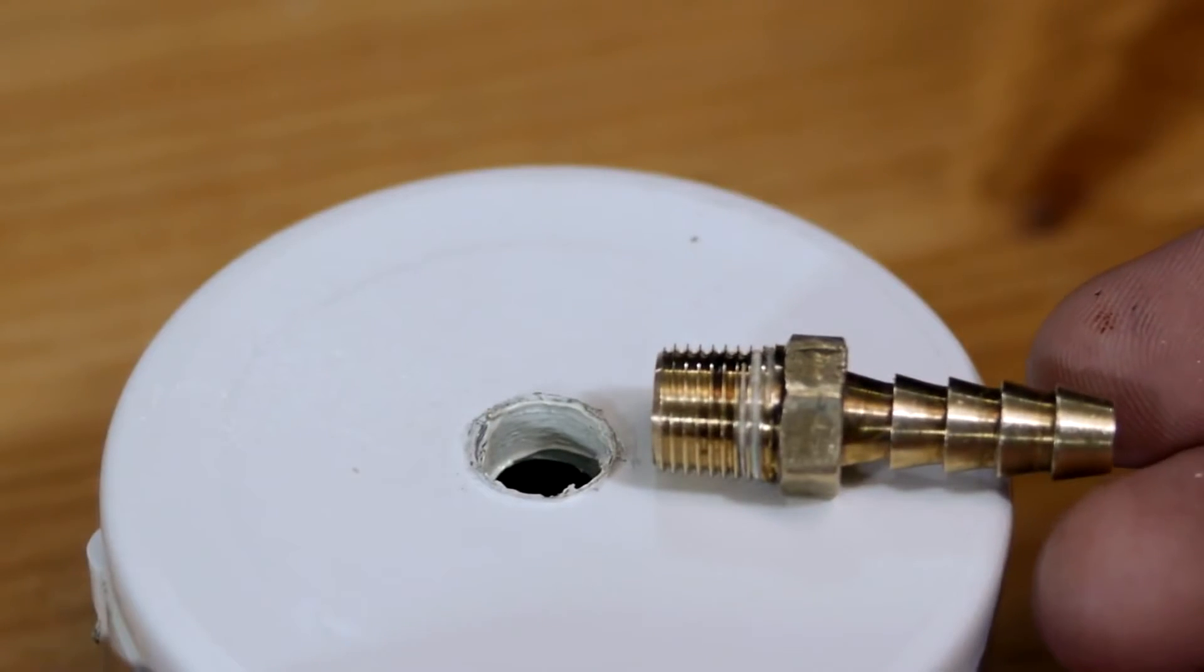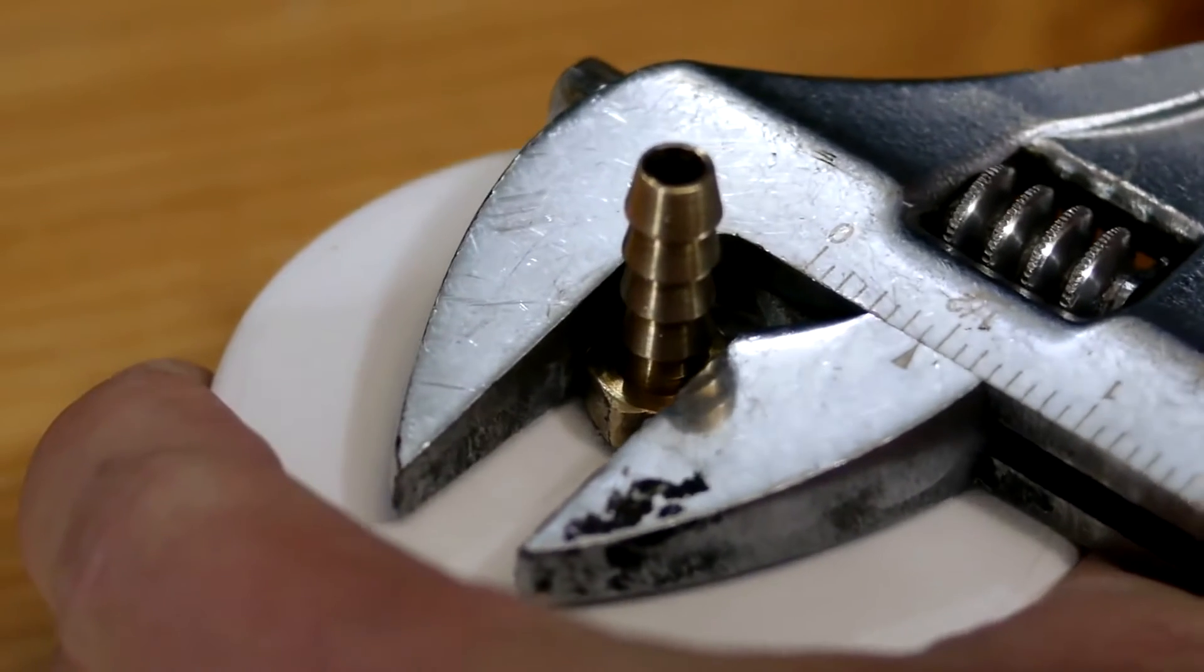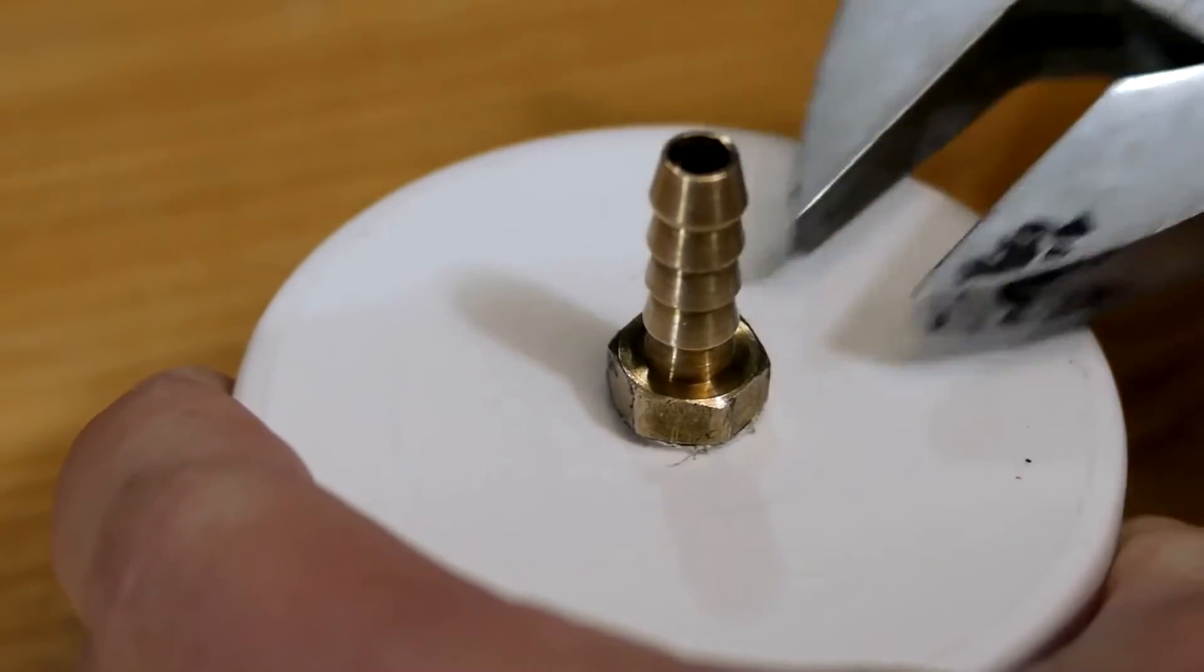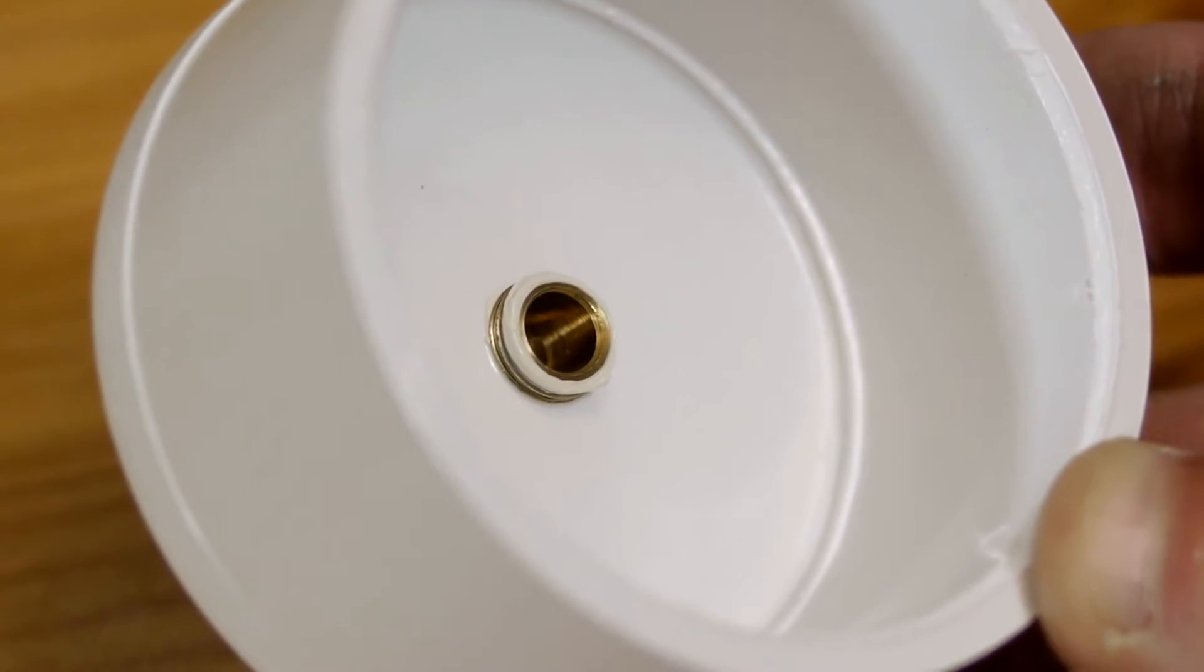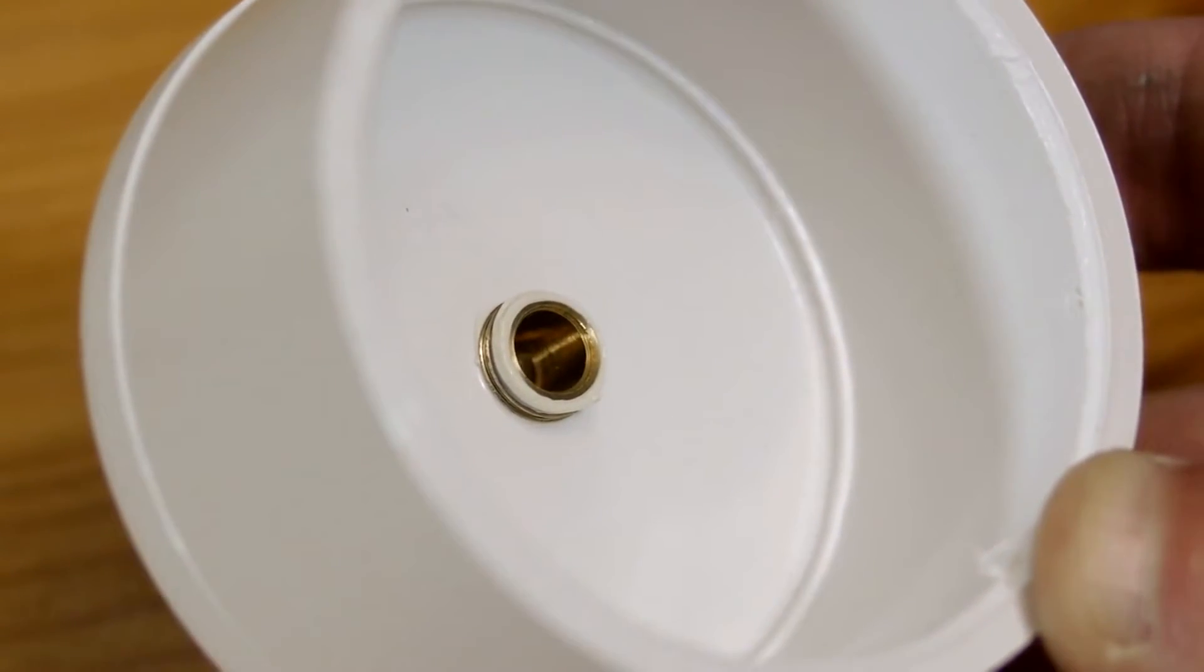The hole drilled should be just small enough that the brass threads bite into the PVC for an airtight seal. The first of the two one-way valves will be mounted over this brass fitting on the inside of the end cap.